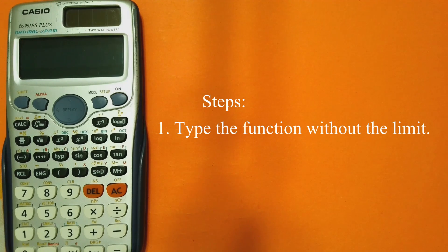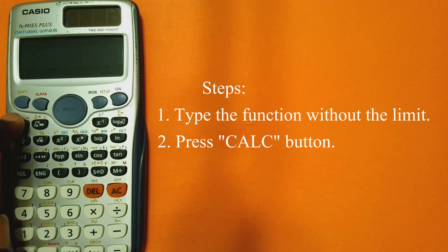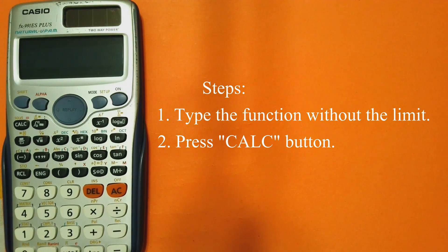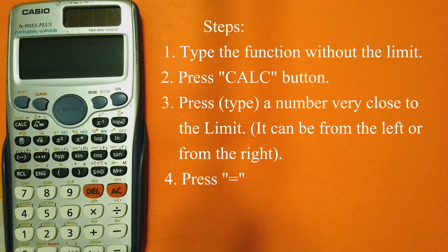First, you put the function without the limit sign in your calculator. Then step two, you press the AC button on your calculator — this is the AC button. Step three, press a number very close to the limit, and I will explain that further as we work the question. Then step four, you press equal to and it gives you the answer to the question.